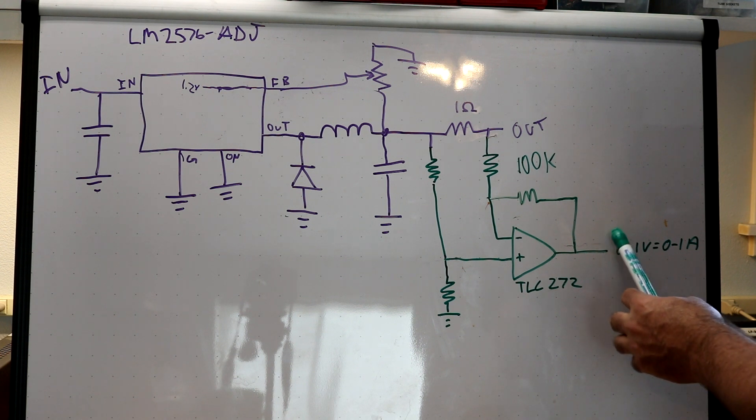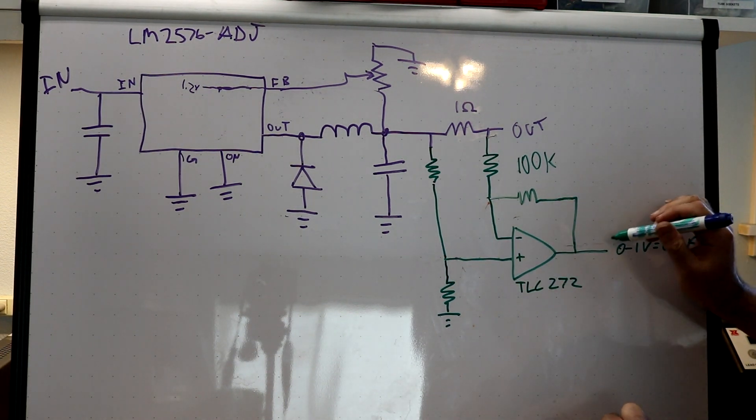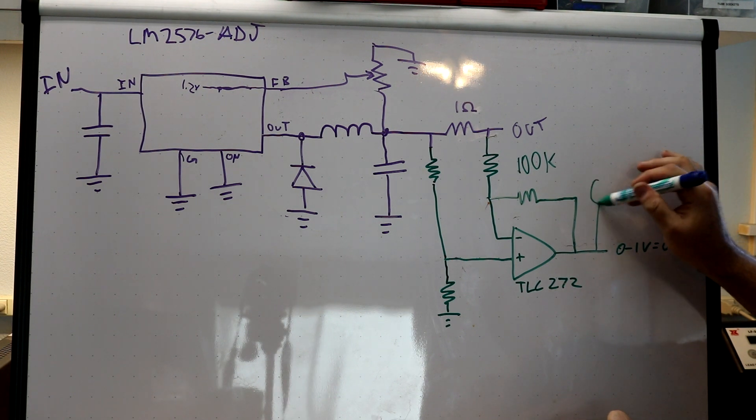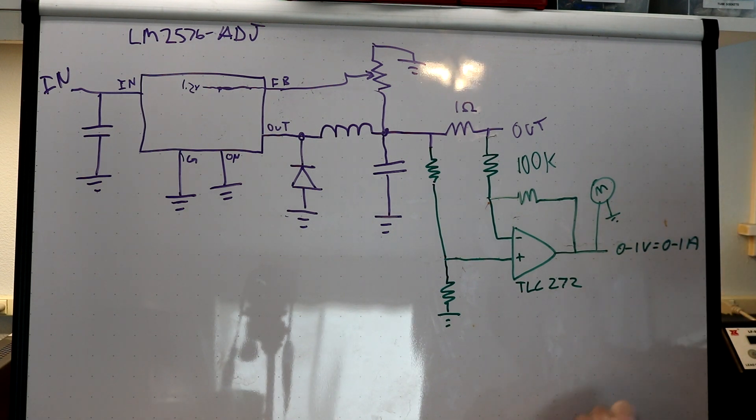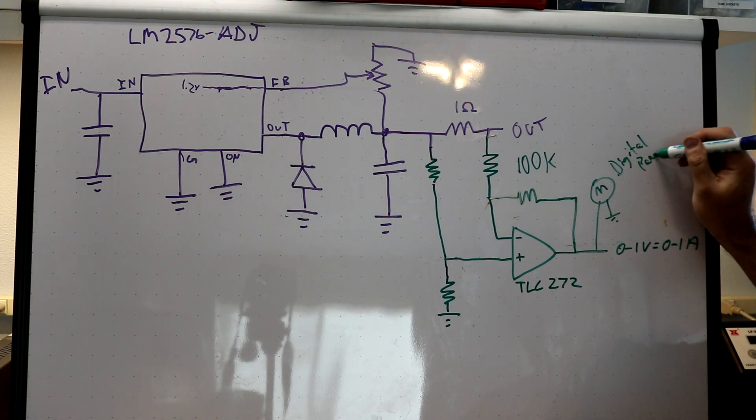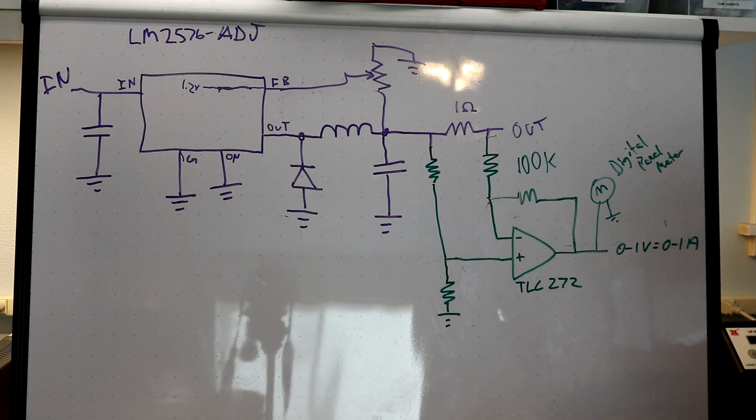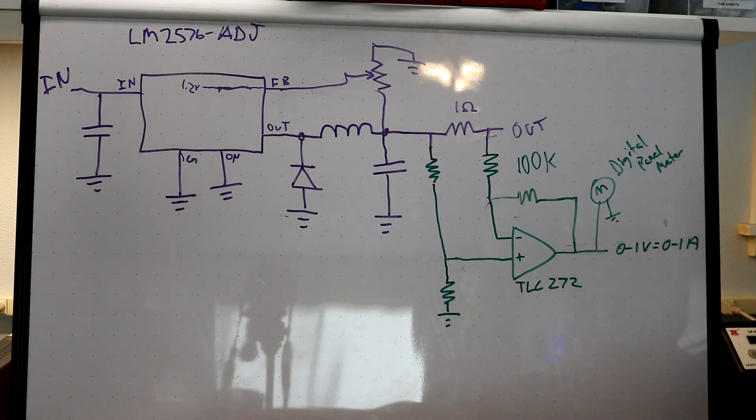So now we are able to measure how much current is being consumed by our supply. We can actually if we wanted to stick a digital panel meter at that point and that would tell us how much current is being consumed. So that is exactly what I did when I actually built the thing. There is the digital panel meter which corresponds to that block. So now we have an adjustable power supply and we have a way of measuring the current that is being consumed by that power supply.